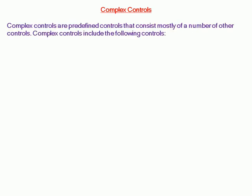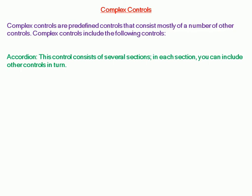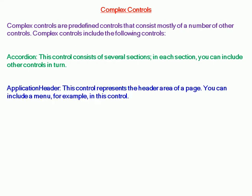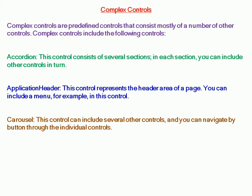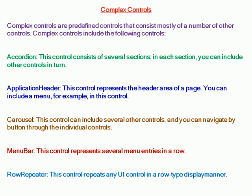Complex controls are predefined controls that consist mostly of a number of other controls. These include: Accordion — consists of several sections, each of which can include other controls. Application Header — represents the header area of a page where you can include a menu. Carousel — includes several other controls navigable by button. Menu Bar — represents several menu entries in a row. Row Repeater — repeats any UI control in a row-type display manner.